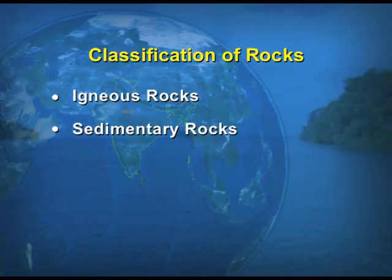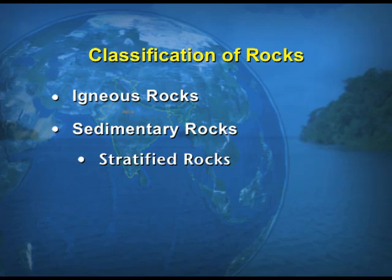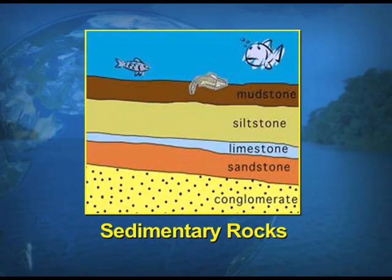Now we talk about the stratified rocks. In this visual you can see the layers of the rocks. The sediments are deposited layer after layer — once a layer is deposited, further sedimentation takes place above the existing layer. That is the form of strata, and consequently these rocks are also known as stratified rocks, because this layer-after-layer formation is what is known as the sedimentary rock.